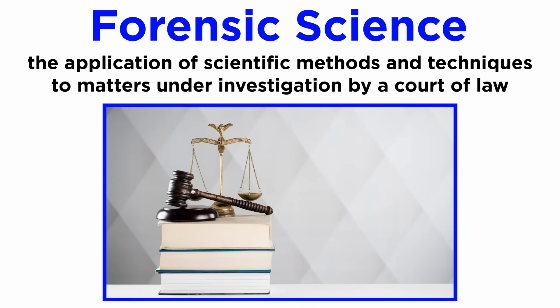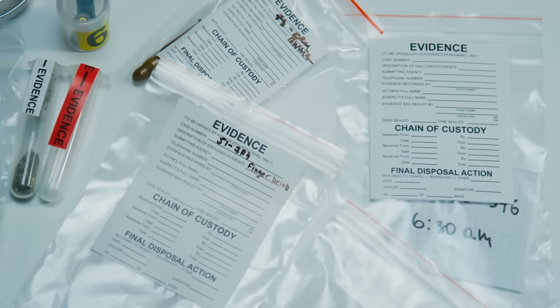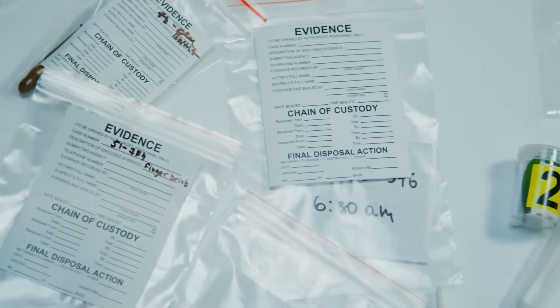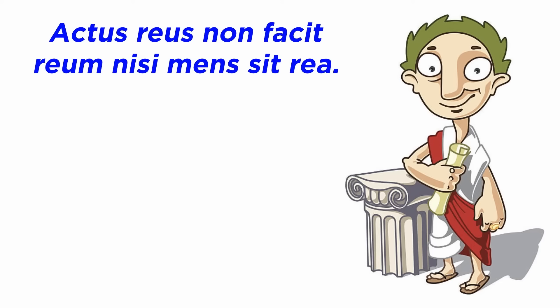As we just discussed, forensic science is all about applying different scientific techniques to matters under legal investigation. Evidence found on the scene of the crime will help us determine certain things empirically, but first it is essential to understand the basics of what constitutes a crime and what establishes a crime.